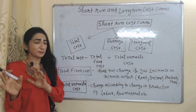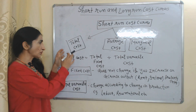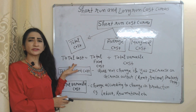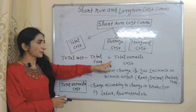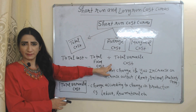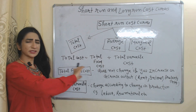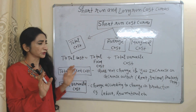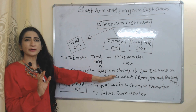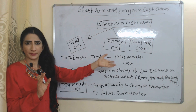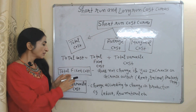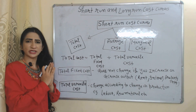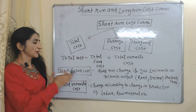Short-term cost is mainly divided into three parts: total cost, average cost, and marginal cost. Total cost equals total fixed cost plus total variable cost. Total fixed cost does not change if you increase or decrease your output — for example, cost of rent, interest, and property tax.